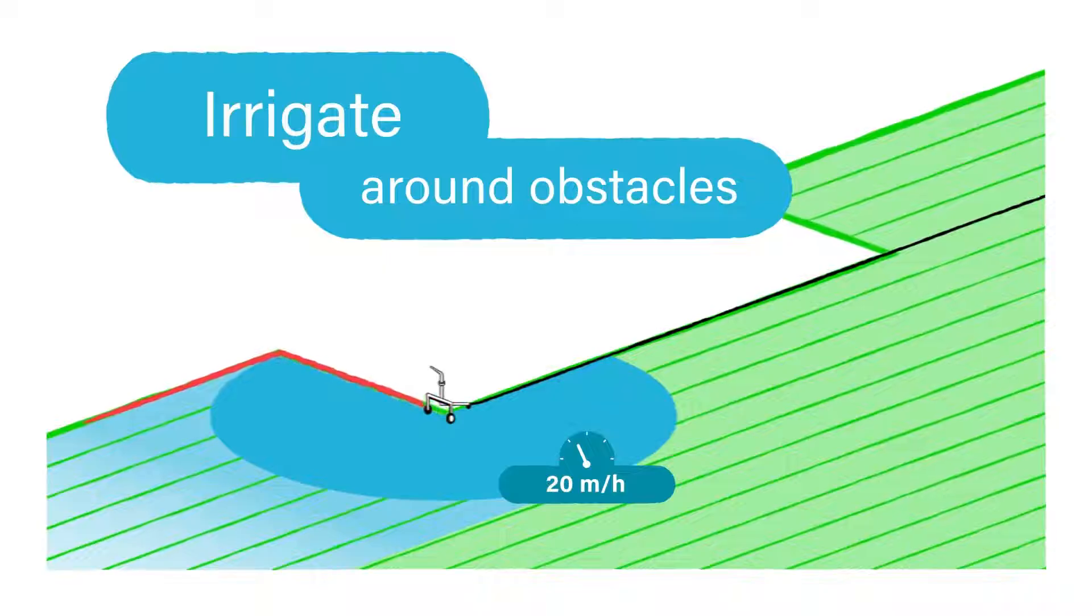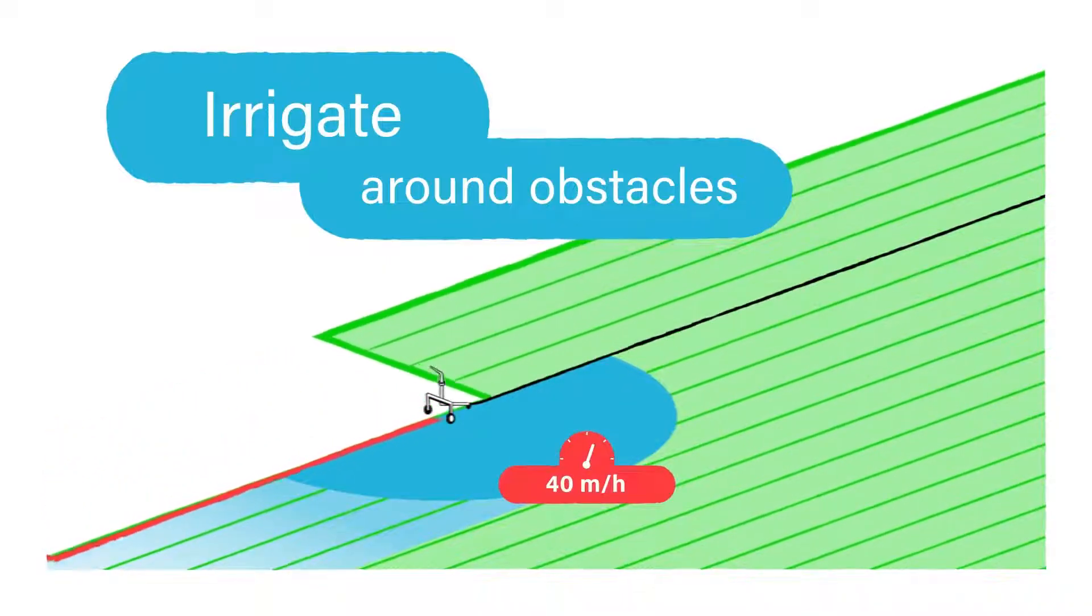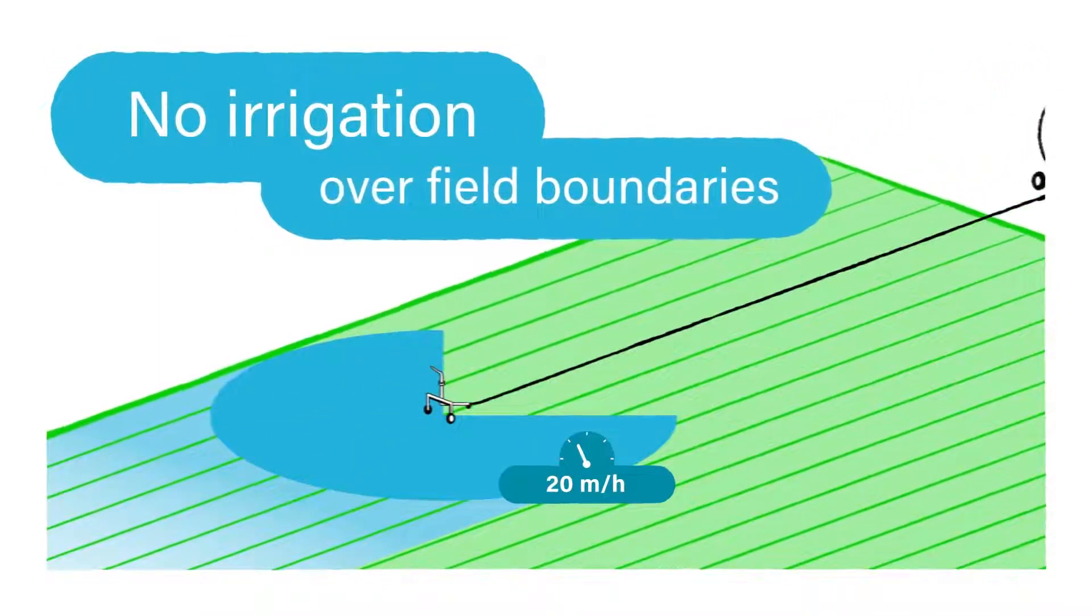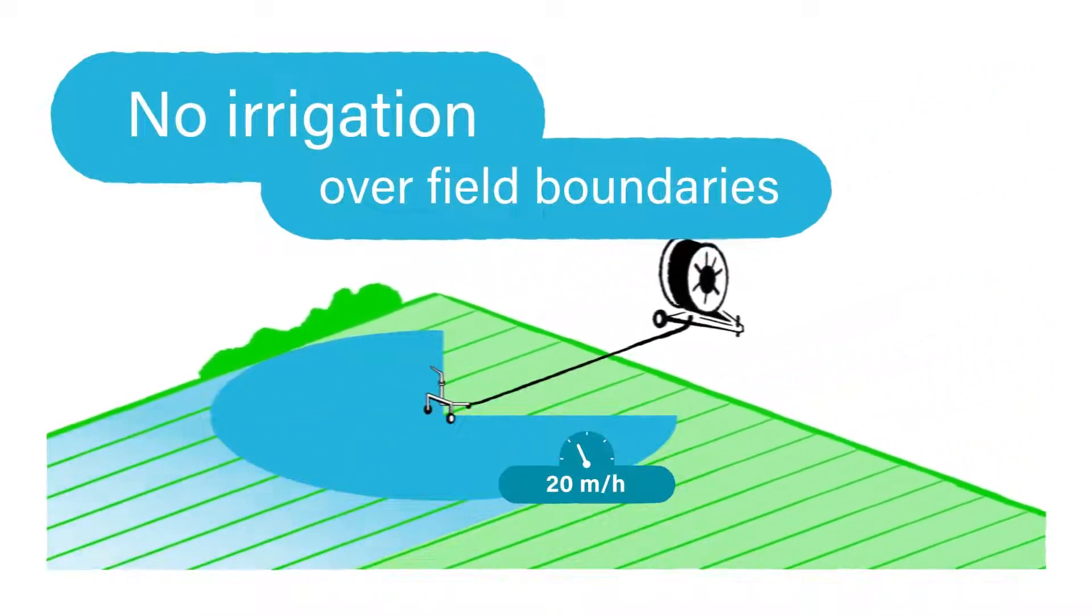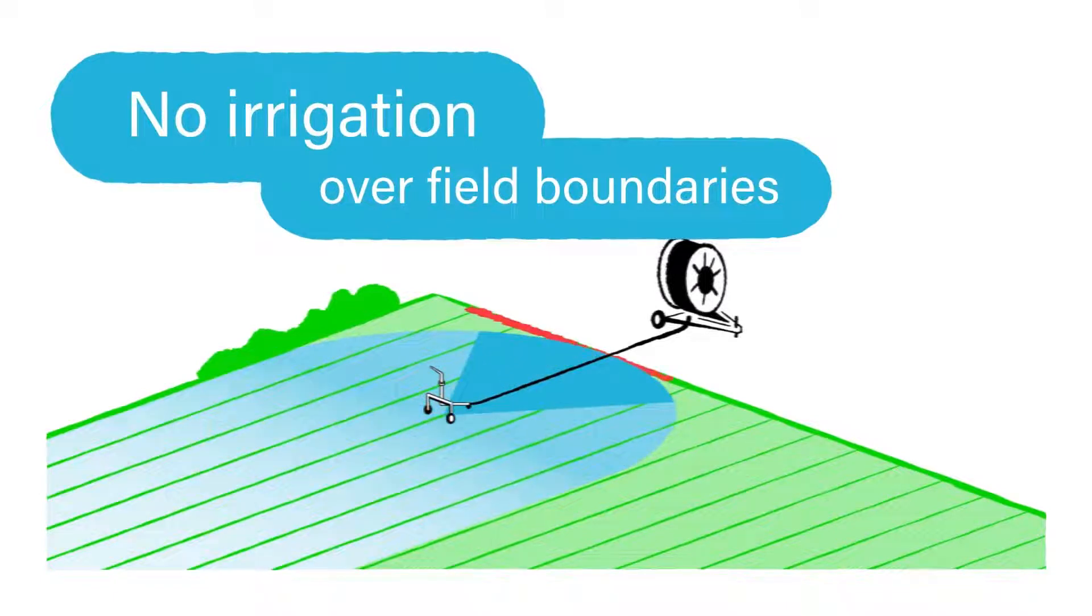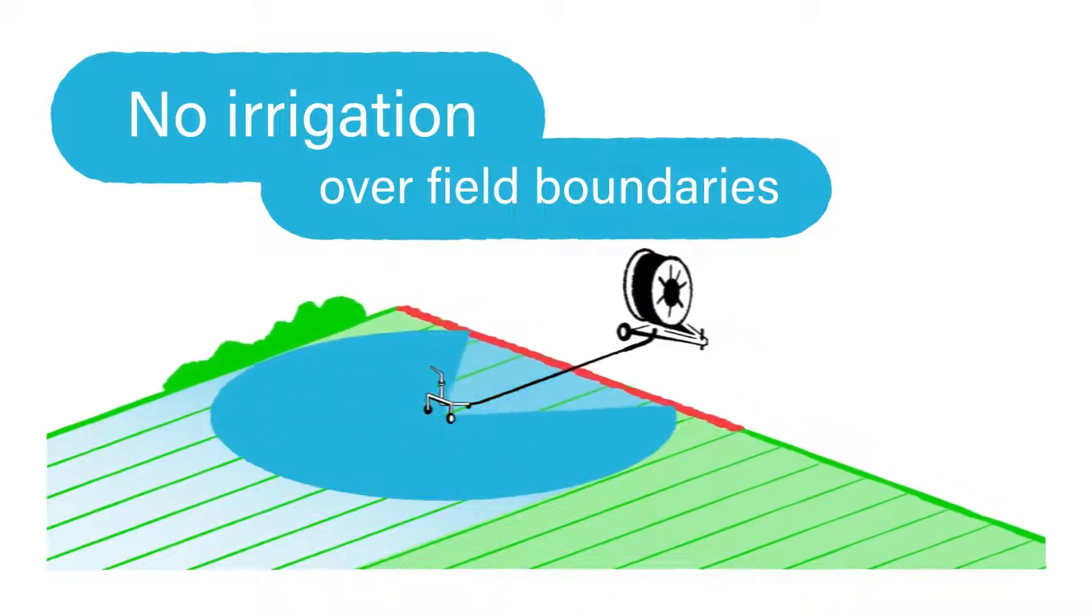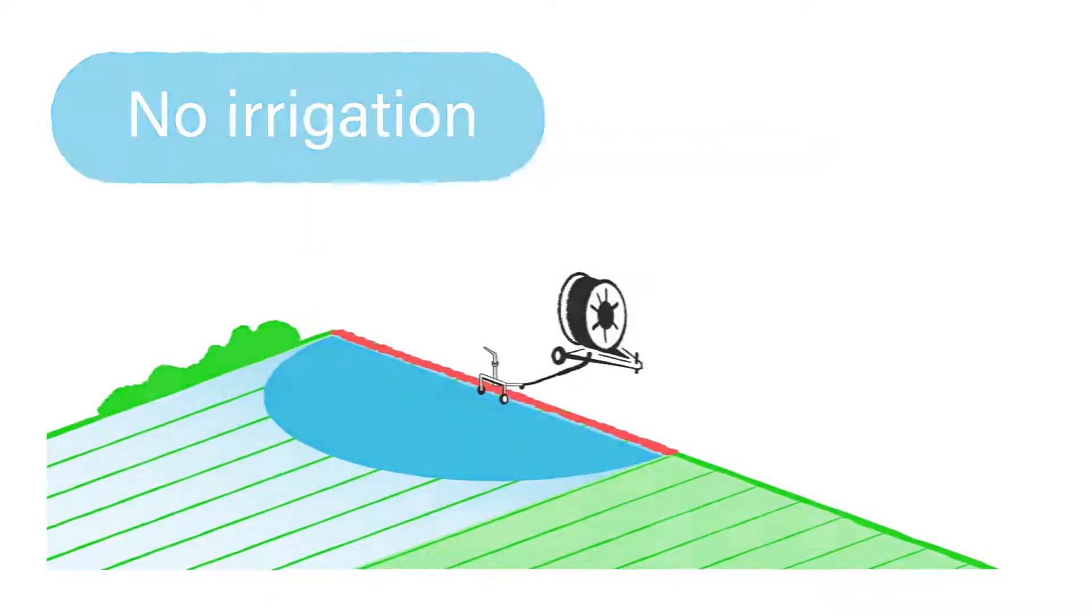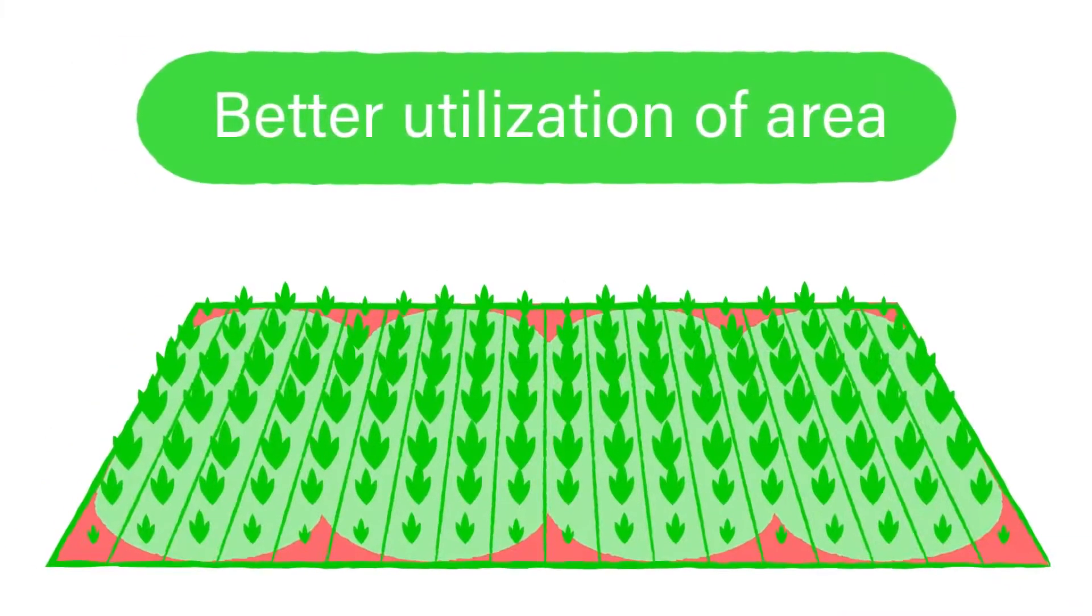It also controls the speed of the irrigation machine in order to ensure an equal application rate. All this will be done automatically just using Rain Dancer's GPS position, the throwing width, and the field's shape.